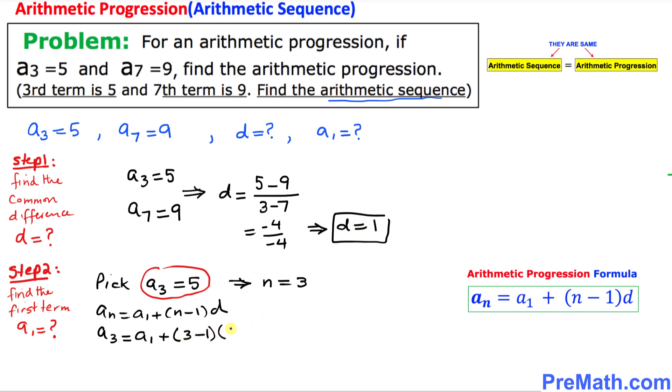In our previous step we figured out d = 1, and we know that a₃ = 5, so I'm going to replace it. That means 5 = a₁ + (3 - 1) times 1, which gives us 5 = a₁ + 2.